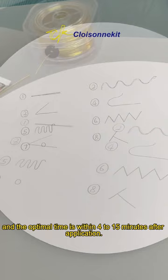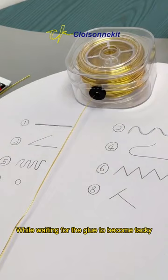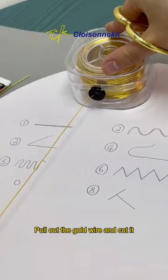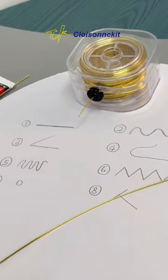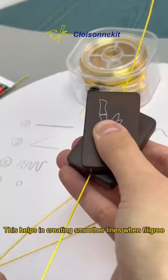While waiting for the glue to become tacky, we can prepare the gold wire in advance. Pull out the gold wire and cut it. Ensure to cut them vertically with scissors. Use the wire straightening boards to clamp the gold wire and gently pull to straighten the wire. This helps in creating smoother lines when filigree.